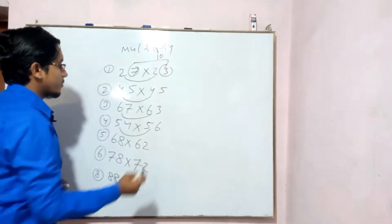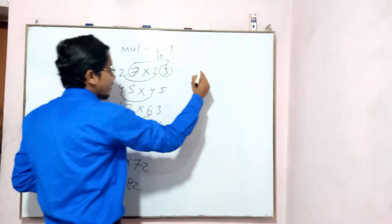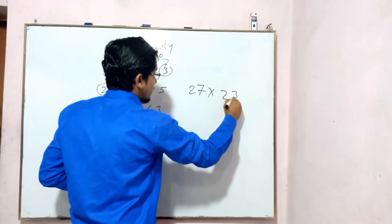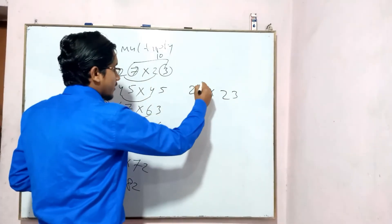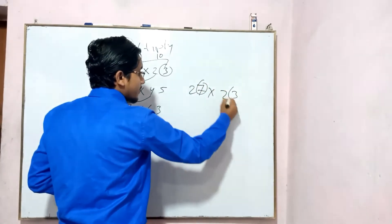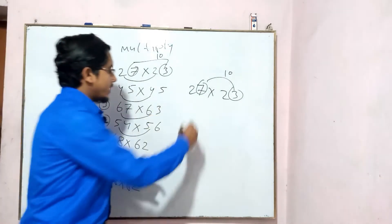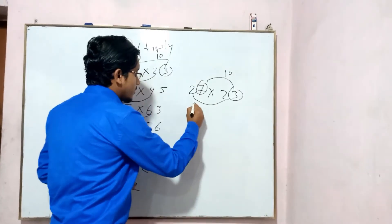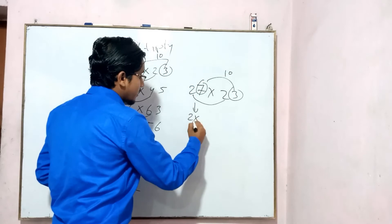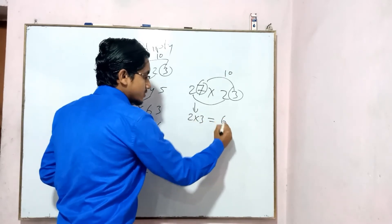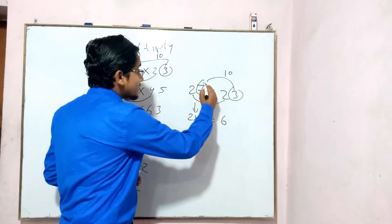Let me show you the first question I have written. 27 into 23. You have to multiply. You can go and get six. You can multiply.